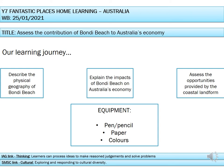Hello Year 7 and welcome to your final lesson of Half Term and your final lesson of Fantastic Places. We have decided to finish with Australia. We've got three parts to our lesson as always. The first part is we are going to describe the physical geography of a beach called Bondi Beach, which is in Australia.